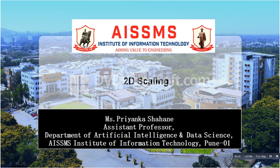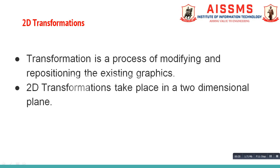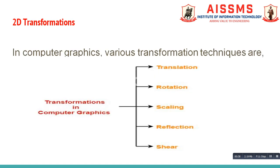In this video, we are going to study 2D Scaling. First of all, let us see what is 2D transformation. Transformation is a process of modifying and repositioning the existing graphics. 2D transformation takes place in a two-dimensional plane, meaning a plane containing X and Y axis. In computer graphics, various transformation techniques are translation, rotation, scaling, reflection, and shear. In this video, we are going to study the scaling operation in detail.